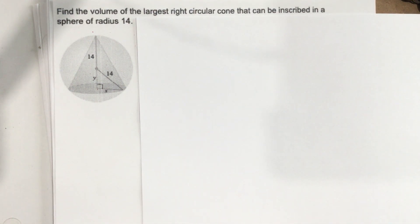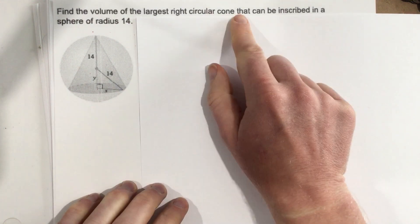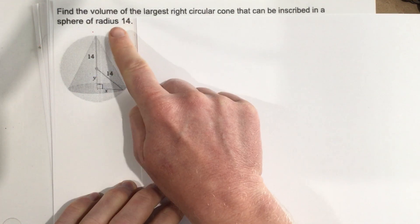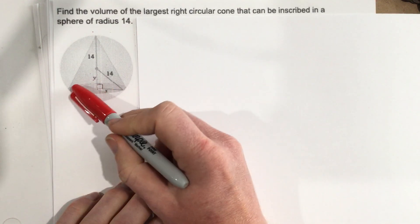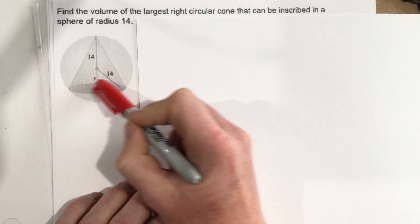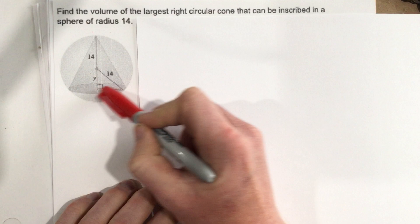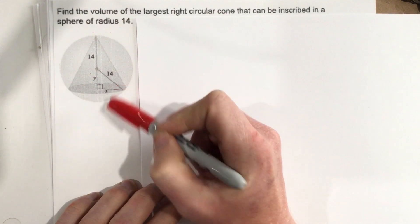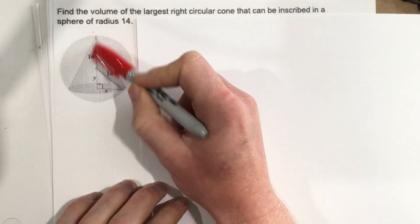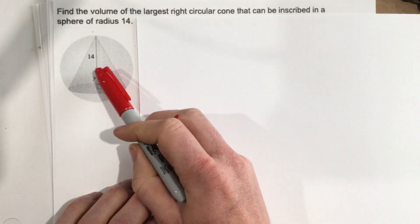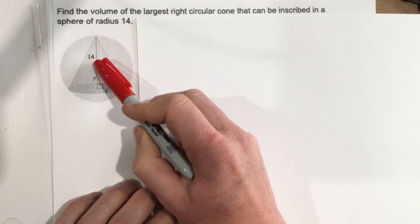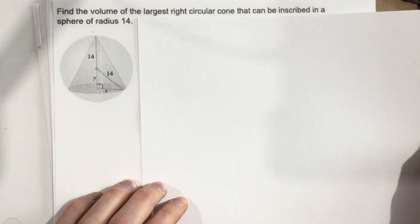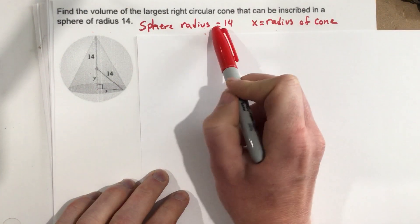This is problem number two from section 4.6. It says find the volume of the largest right circular cone that can be inscribed in a sphere of radius 14. So they want to know the largest volume for this right circular cone inside the sphere, given that the sphere's radius is 14. The 14 stretches from the center of the sphere to the outer edge, so the sphere's radius is 14.